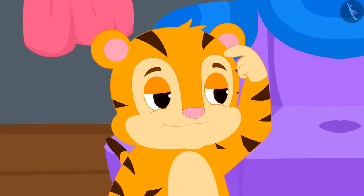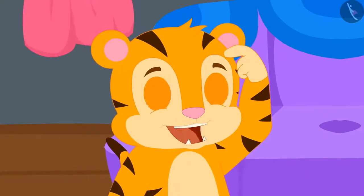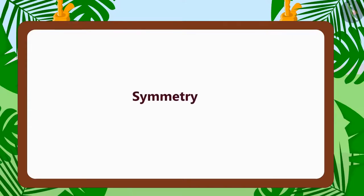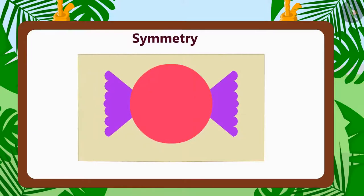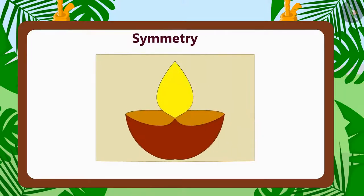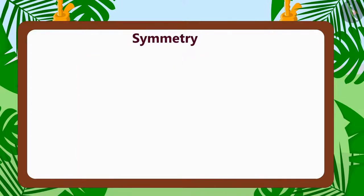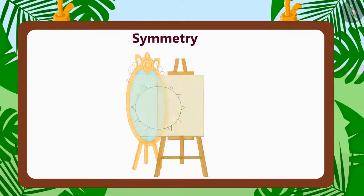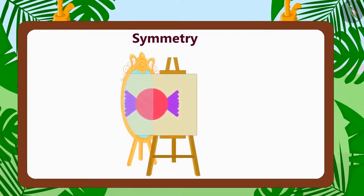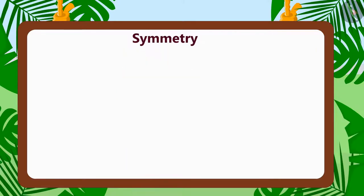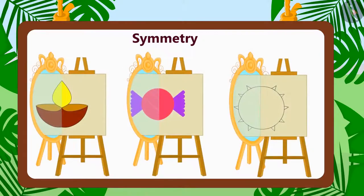Shere Khan scratched his head and asked, 'What is symmetry?' 'Symmetry happens when two parts of any object are the same. This is the reason when you see one half of an object in the mirror, you can see the other half looking exactly the same — and you feel that the picture is complete. There is no magic in your mirror. The magic actually is in symmetry.'